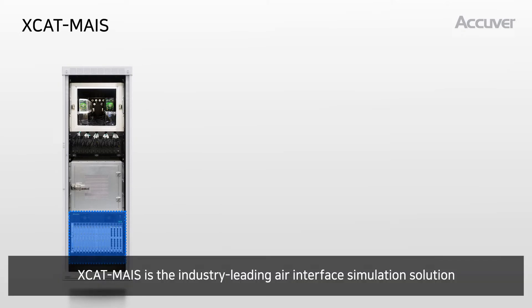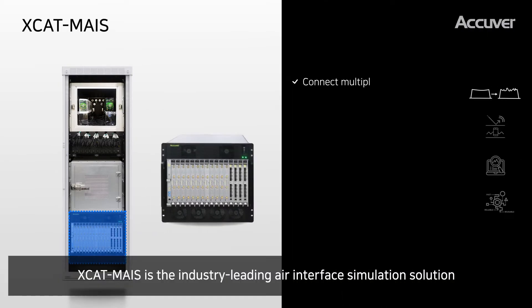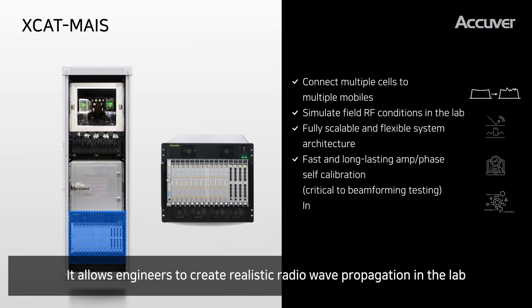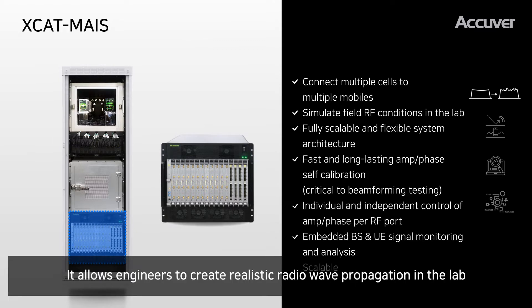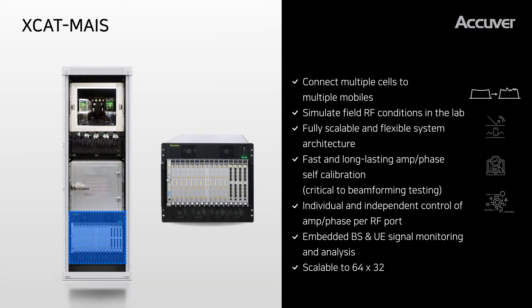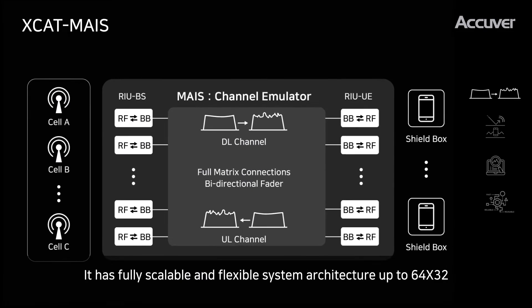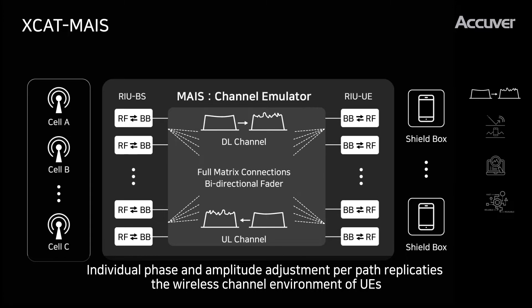X-CatMaze is the industry-leading air interface simulation solution. It allows engineers to create realistic radio wave propagation in the lab, with a fully scalable and flexible system architecture up to 64 by 32. Individual phase and amplitude adjustment per path replicates the wireless channel environment of UEs.